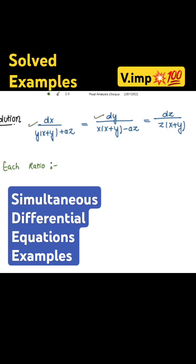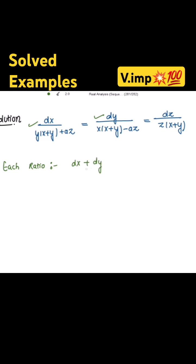By adding these two. So each ratio, that is dx plus dy divided by the denominator of the first ratio, adding this to the denominator